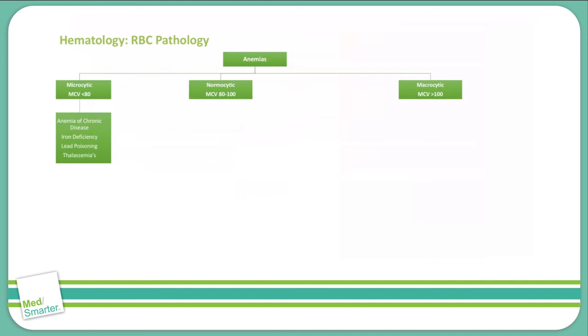With microcytic anemias, where you have that MCV less than 80, that's commonly seen in anemia of chronic disease, in iron deficiency anemia, we see it in lead poisoning, and then in thalassemias. That's going to be alpha and beta thalassemias here.